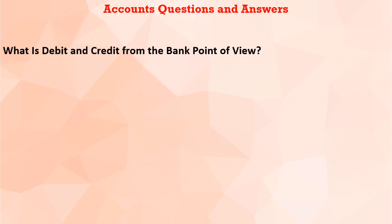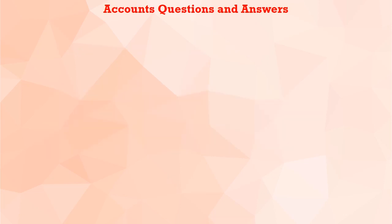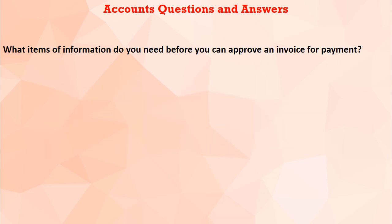What is debit and credit from the bank's point of view? Credit means what comes in. Debit means what goes out. That is the bank's point of view — credit means what comes in, and debit means what goes out.